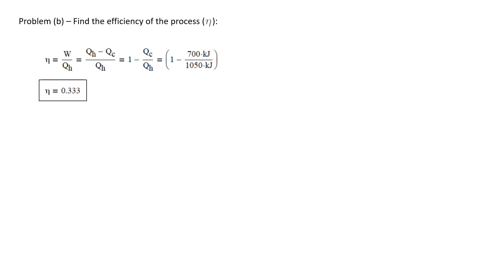We're asked to find the efficiency of the process. For a power cycle, the efficiency is just the work output divided by the energy transferred in by heat transfer from the high temperature source. An energy balance tells us that work equals QH minus QC. Simplifying, efficiency equals one minus QC over QH. With the given values, we calculate that the thermal efficiency of this power cycle is 0.333.